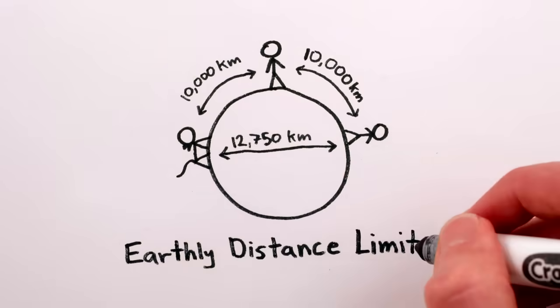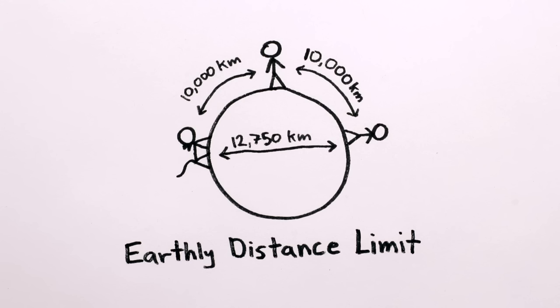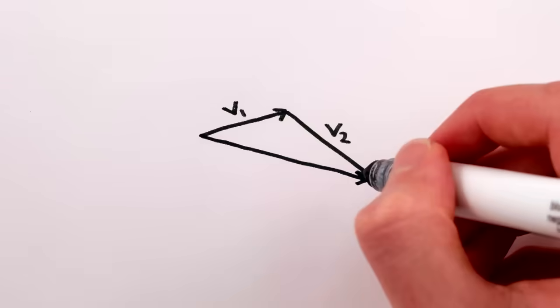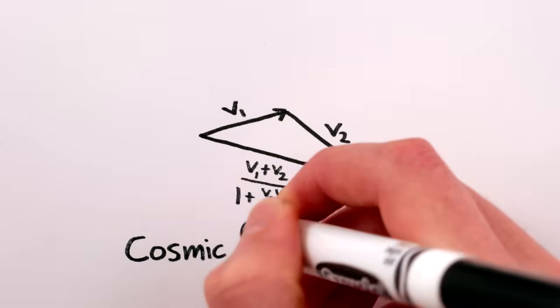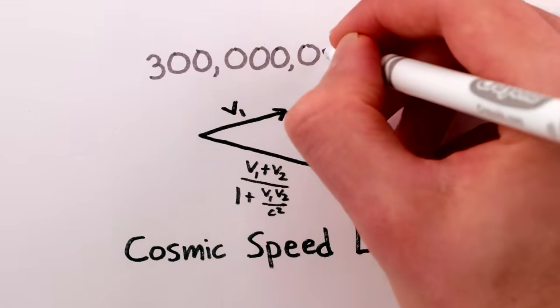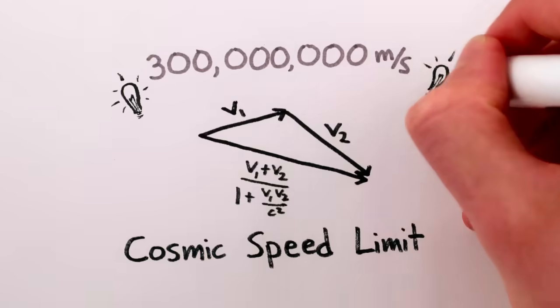It's the earthly distance limit, though we normally call it the diameter of the earth. And similarly, when you try to add two velocities together, there's a cosmic speed limit of 300 million meters per second, that is, the speed of light.